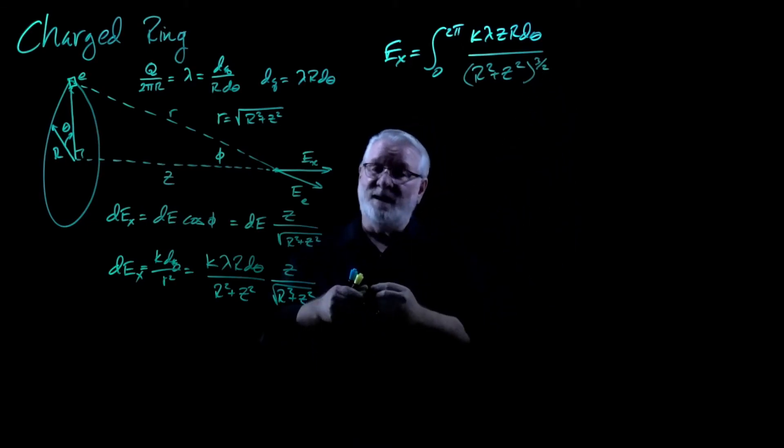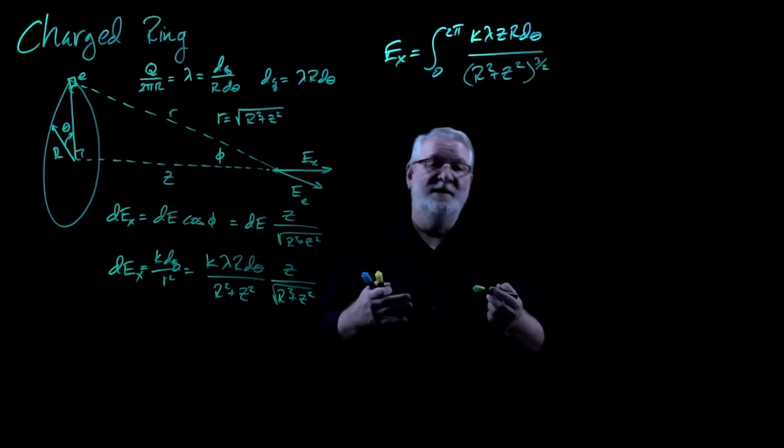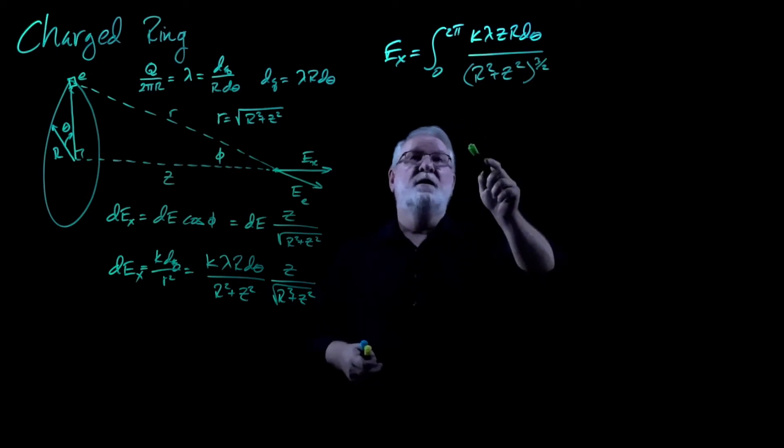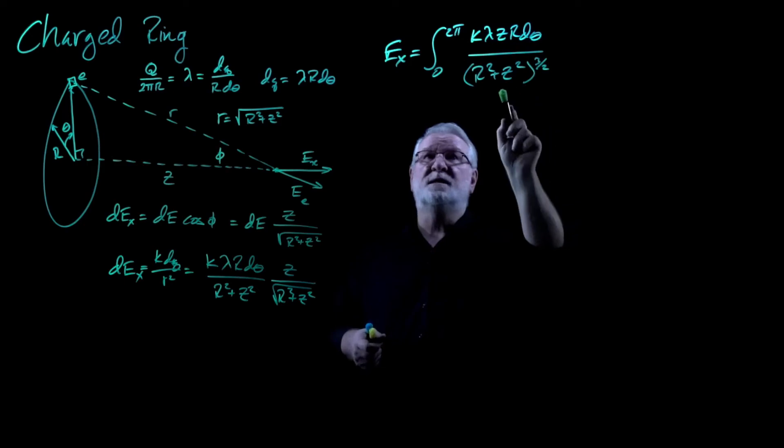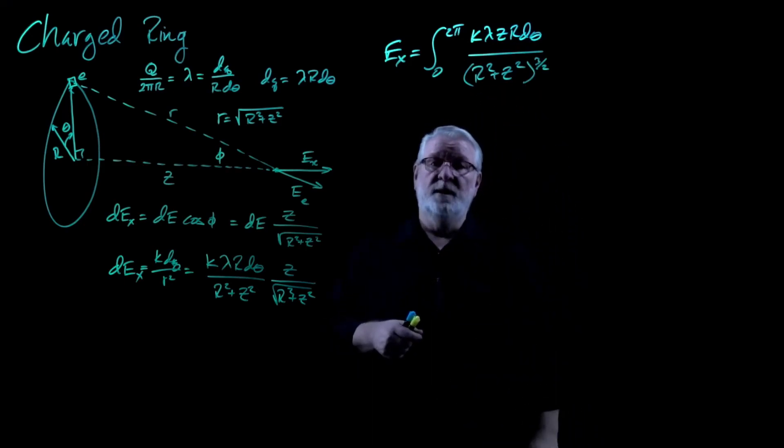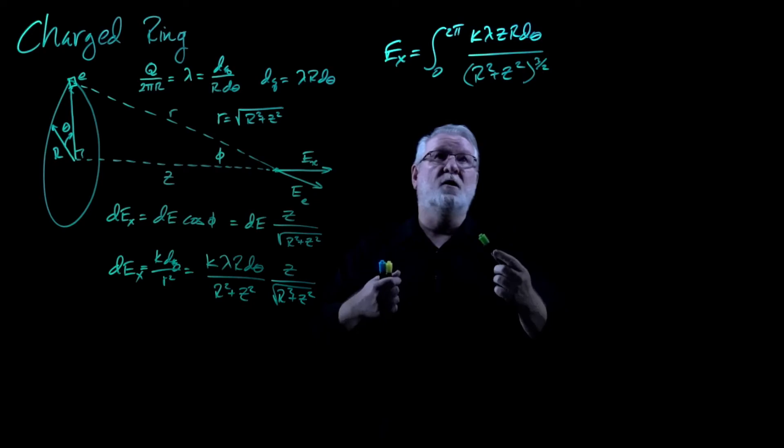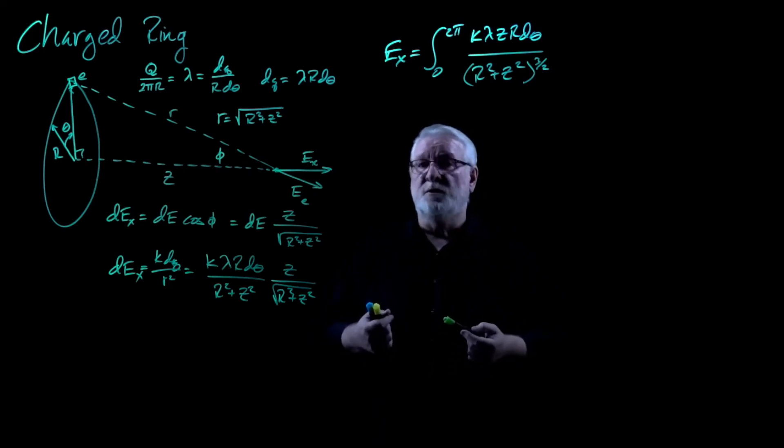Again, a pretty messy integral. I wouldn't want to take an integral like this every day until you realize that K is a constant, lambda is a constant, Z is a constant, R is a constant, and this entire denominator is a constant. The only thing we're integrating here is dθ from zero to 2π.